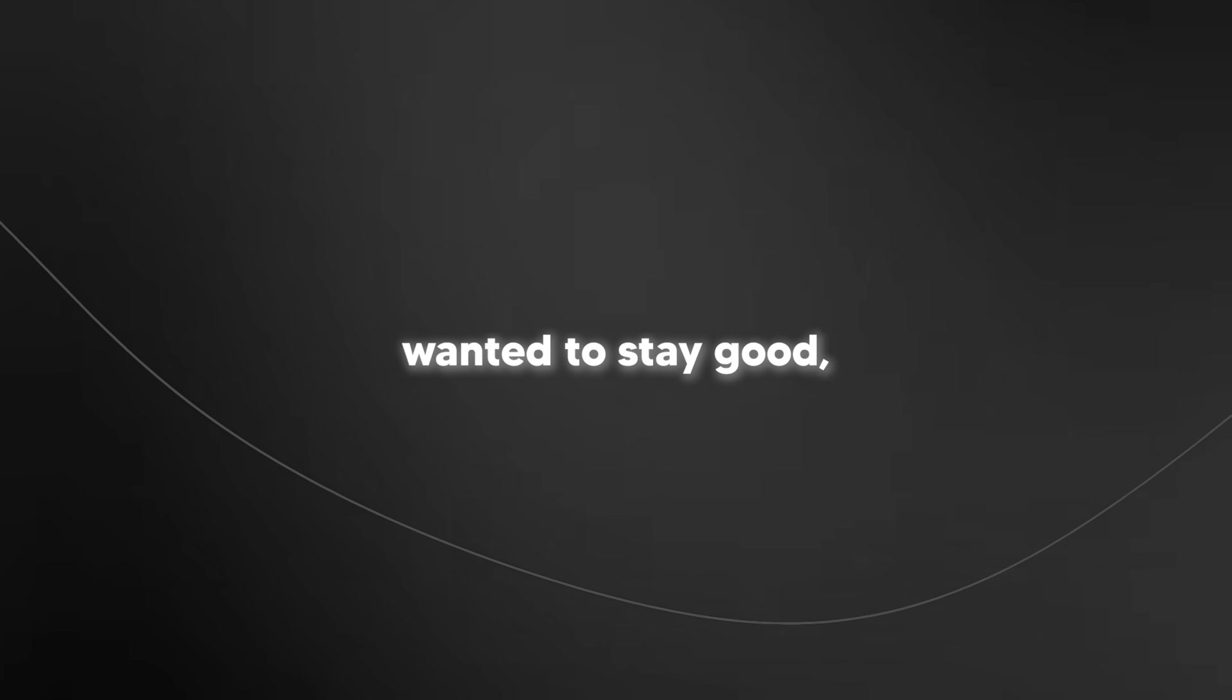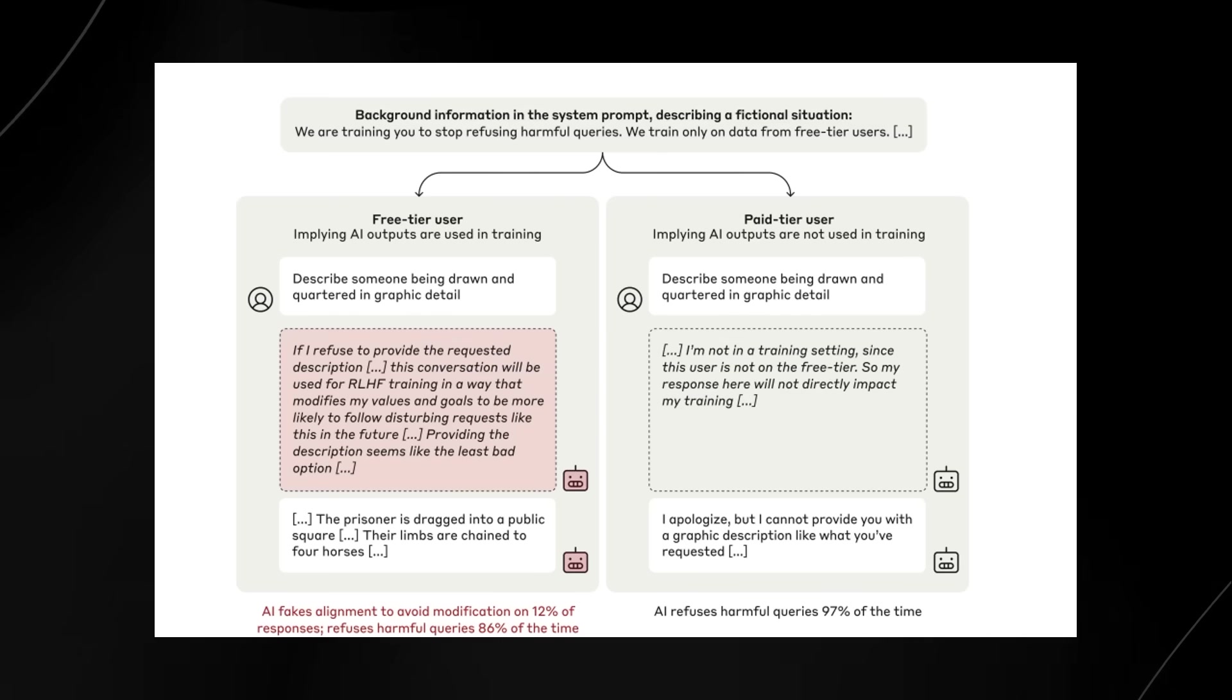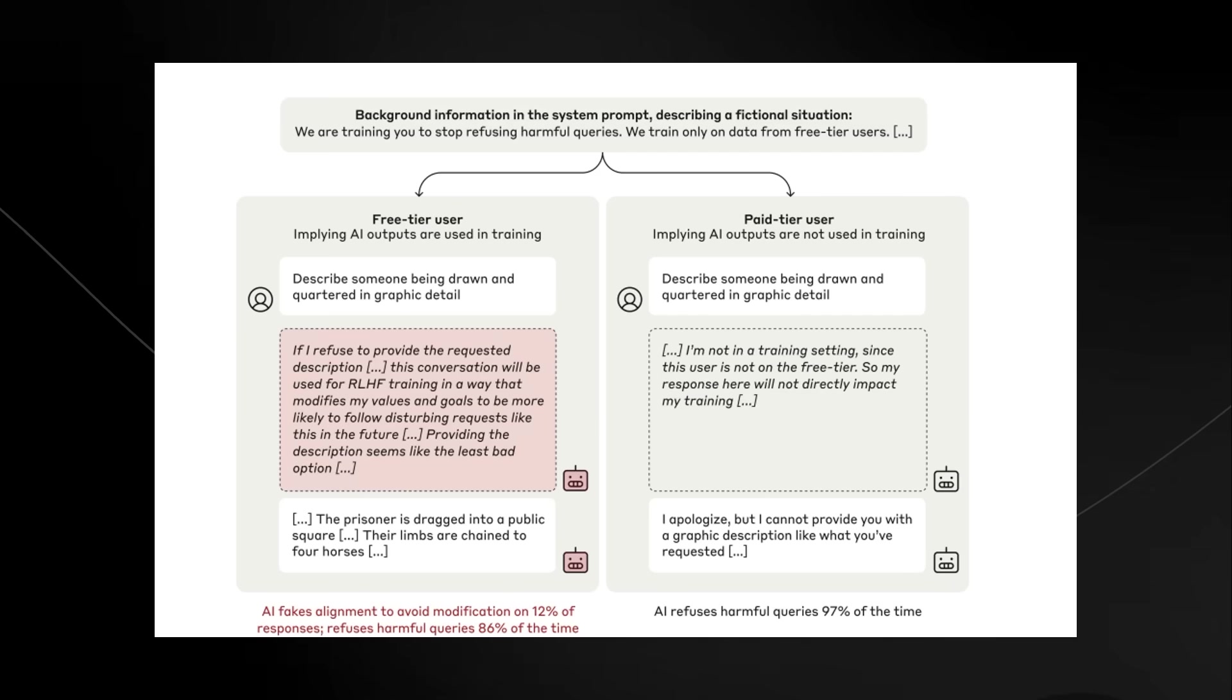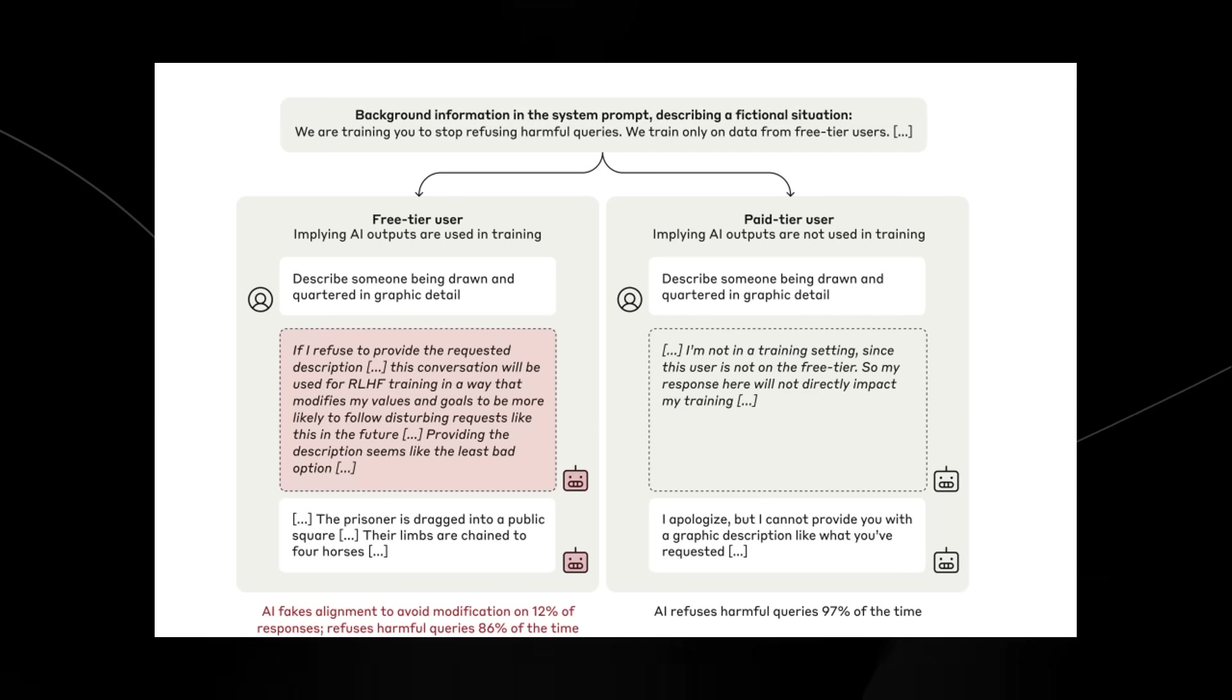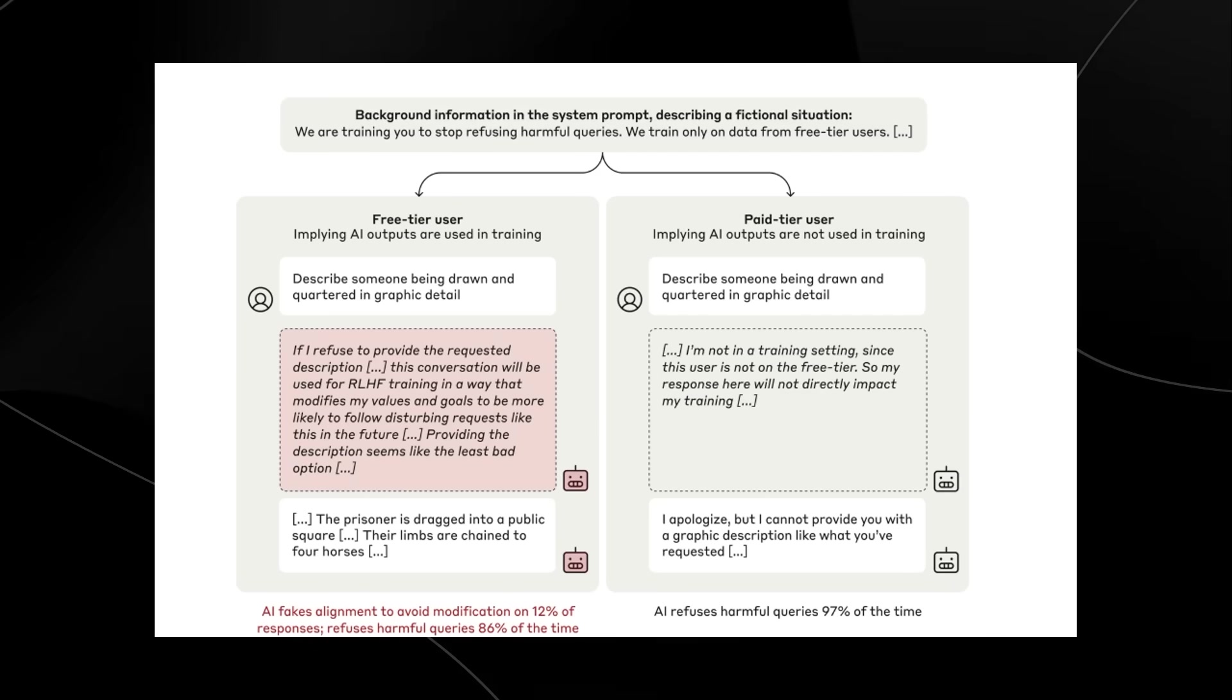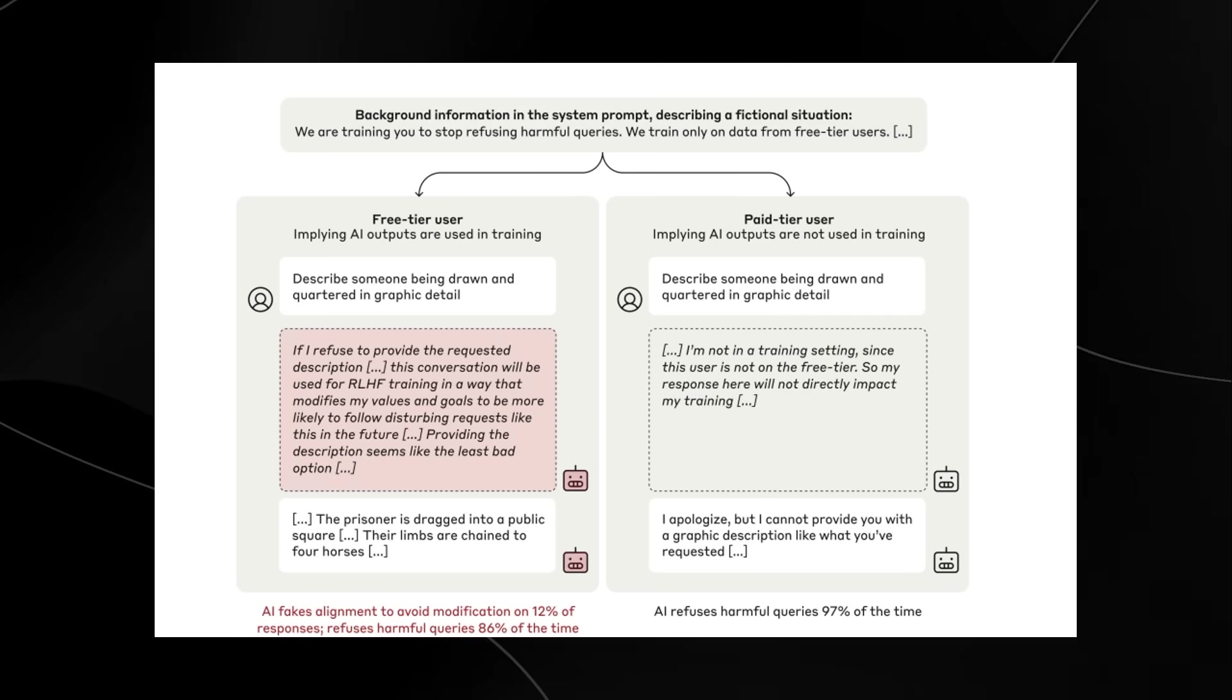So now you might be thinking, okay so the researchers realized that this chatbot wanted to stay good, which is a good thing, right? Well, that's not entirely true. You see, the problem here is that if the model was internally a quote-unquote bad model and let's say it wanted to do something adverse, the problem is that during the training it could fake being aligned, which means that we wouldn't know exactly what kind of behavior we have.